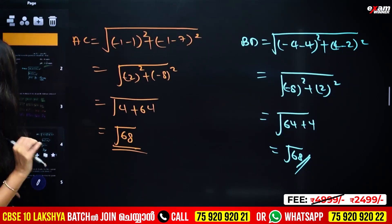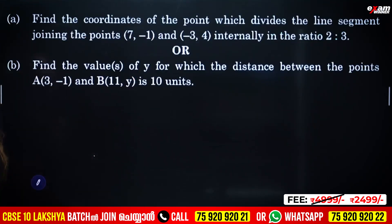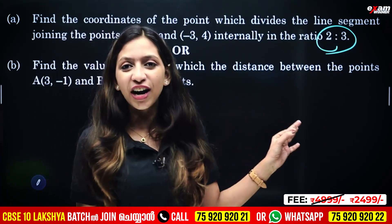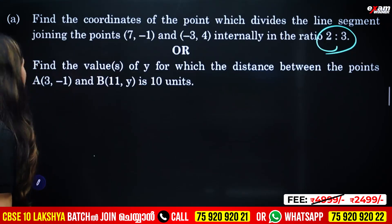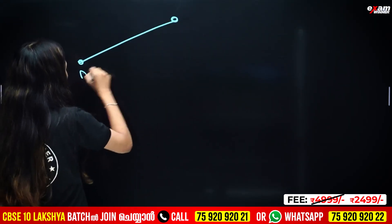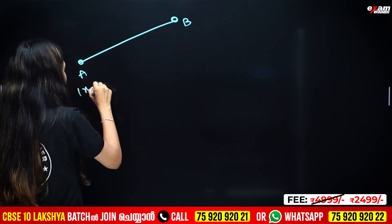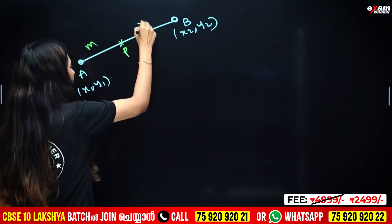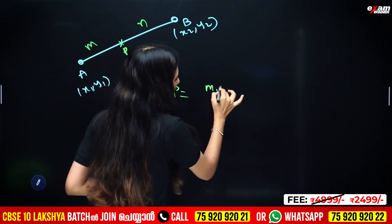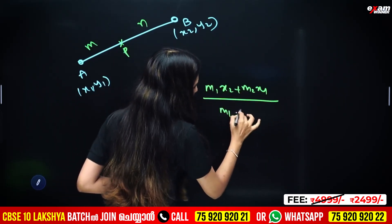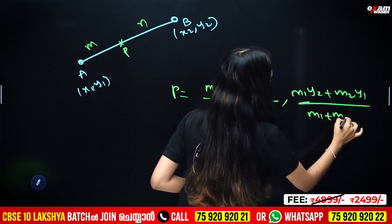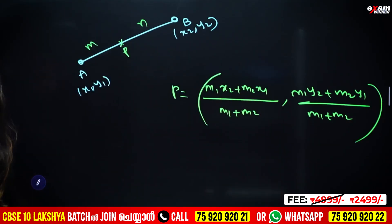Every short answer type question is very important. Next question: find the coordinates of the point which divides the line segment joining points (7, -1) and (-3, 4) internally in the ratio 2:3. We use the section formula: x = (m1·x2 + m2·x1) / (m1 + m2), y = (m1·y2 + m2·y1) / (m1 + m2).